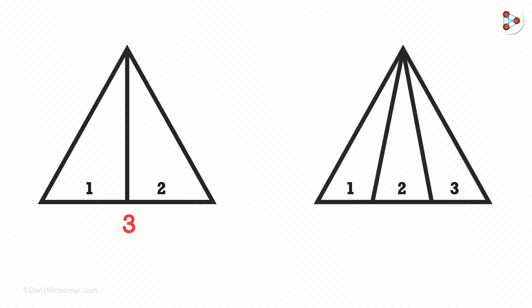If we observe carefully, what are the number of triangles here? 1, 2, 3, 4, 5, and 6. Six triangles. So the total number of triangles here is 6.